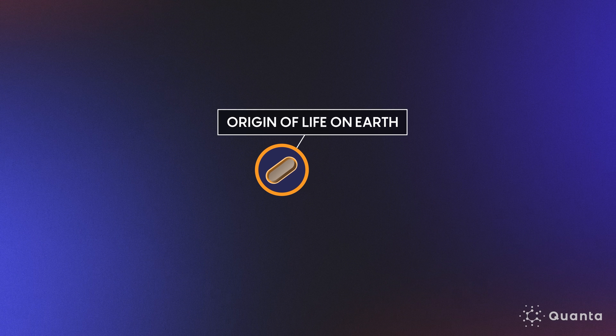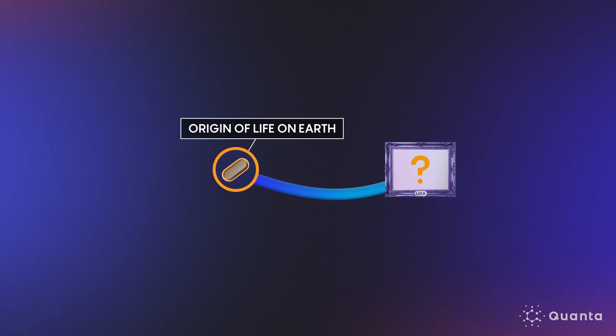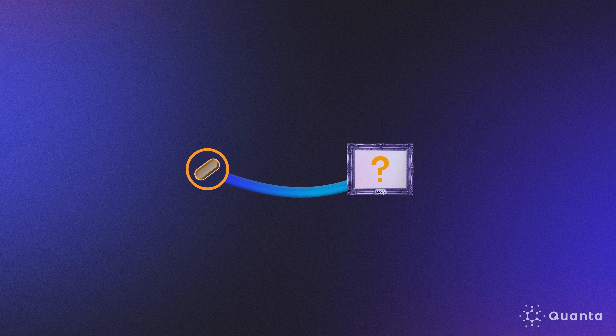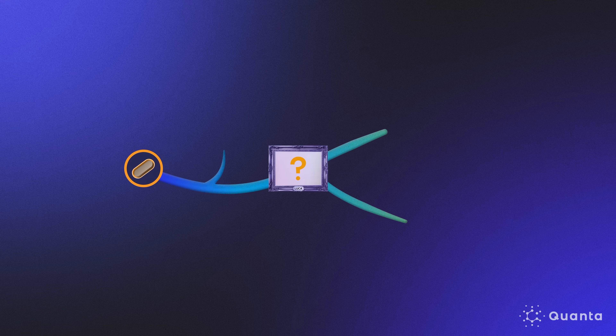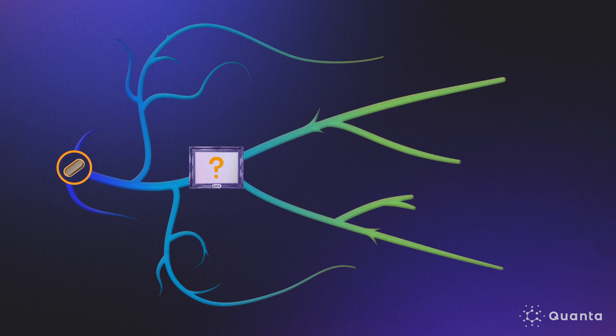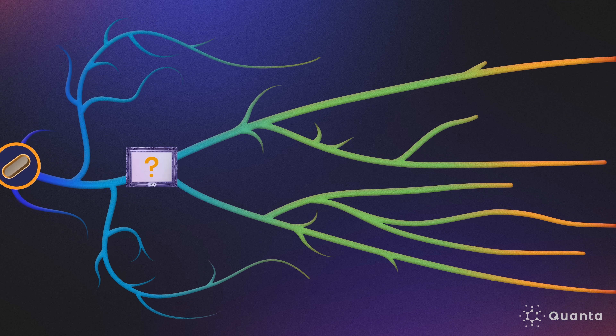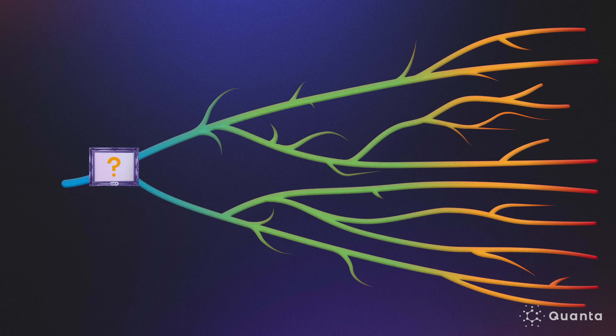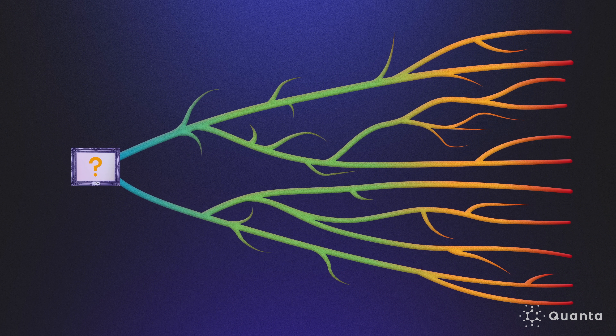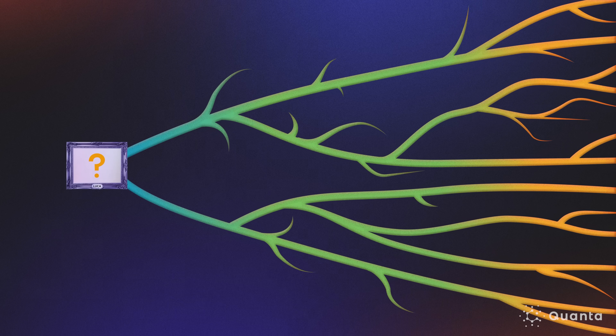Luca was not the origin of life on Earth, but the emergence of life as we know it today. And Luca was not alone. We can think of Luca as more like a population rather than a single individual. There probably were many different types of organisms living at that time whose descendants later died out — some fairly shortly thereafter, or maybe only recently. But Luca survived and went on to evolve into all modern life.